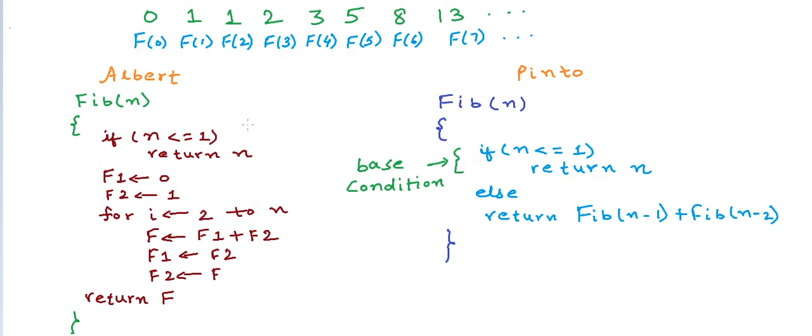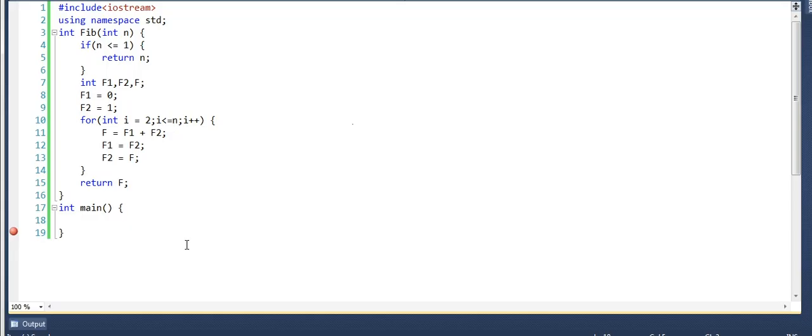Let us quickly try to write these programs in an actual compiler and see what happens. I will write a C++ program and this is the Visual Studio compiler open in front of you. This is Albert's code where he has written an iterative program where he is iterating through all FIs in a loop from 2 to n.